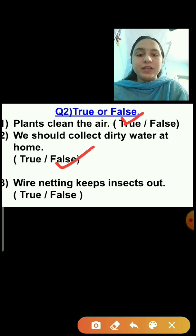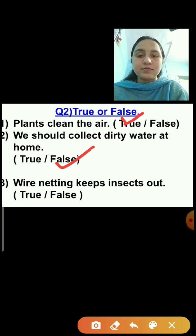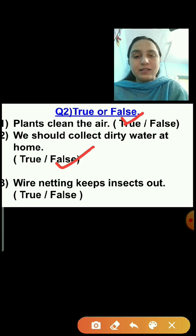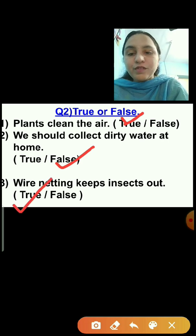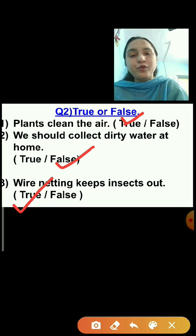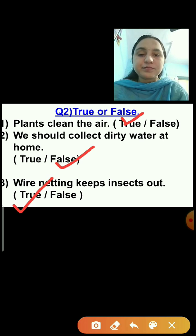Question number 3: Wire netting keeps insects out. This statement is true, so we will click on the true option.